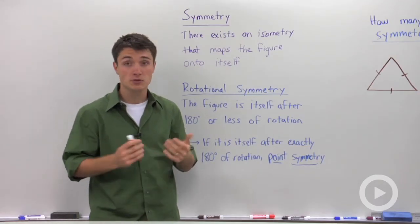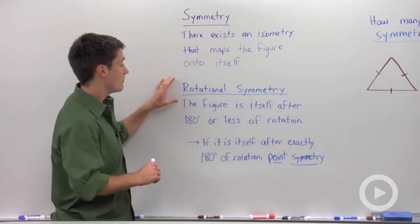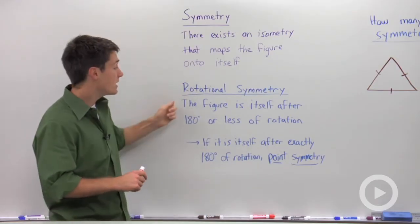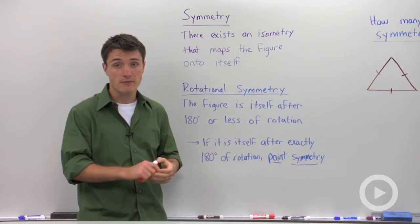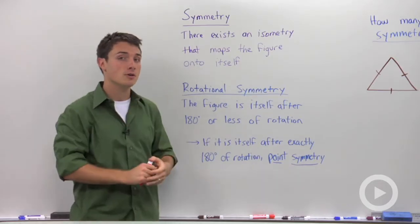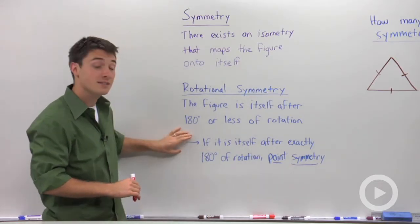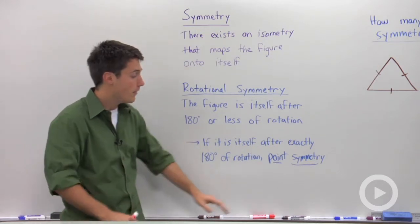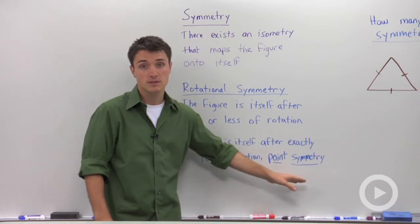We can be more specific, however, for certain objects and say that they have rotational symmetry. An object has rotational symmetry if that figure is itself after you rotate it less than 180 degrees. If it is itself after exactly 180 degrees, no more, no less, then that figure has point symmetry.